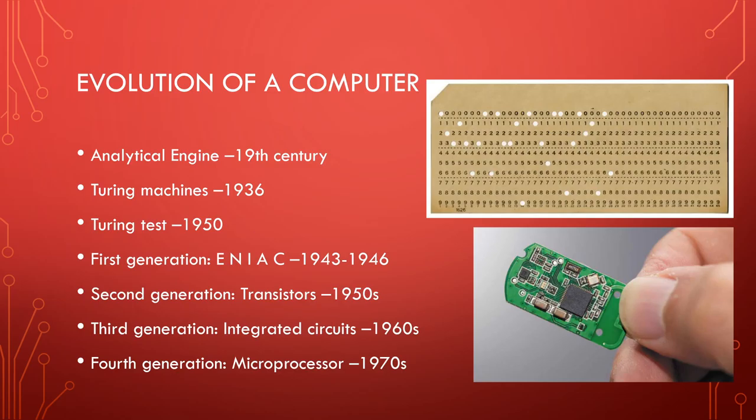That led us to microprocessors — which contain all of the circuitry the computer needs: not just the processor, but some RAM and memory and whatever else. We've gone from integrated circuits with just transistors built in, to actual microprocessors. This is basically what's running all of your stuff today. They're just small — micro means small — processors.